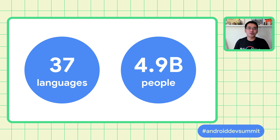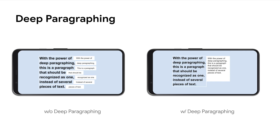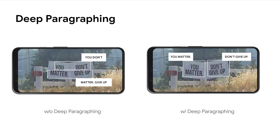We are proud to dramatically expand support to so many more people. When we talk about text recognition, what we care about is not only the characters, words, or lines, but more importantly the meaning. Even if every line is processed accurately, breaking them apart may not make sense. Thanks to deep paragraphing, words and lines are intelligently grouped into sentences and paragraphs based on context, reducing ambiguous recognition due to lack of context. This is a significant quality improvement with minimal additional cost.